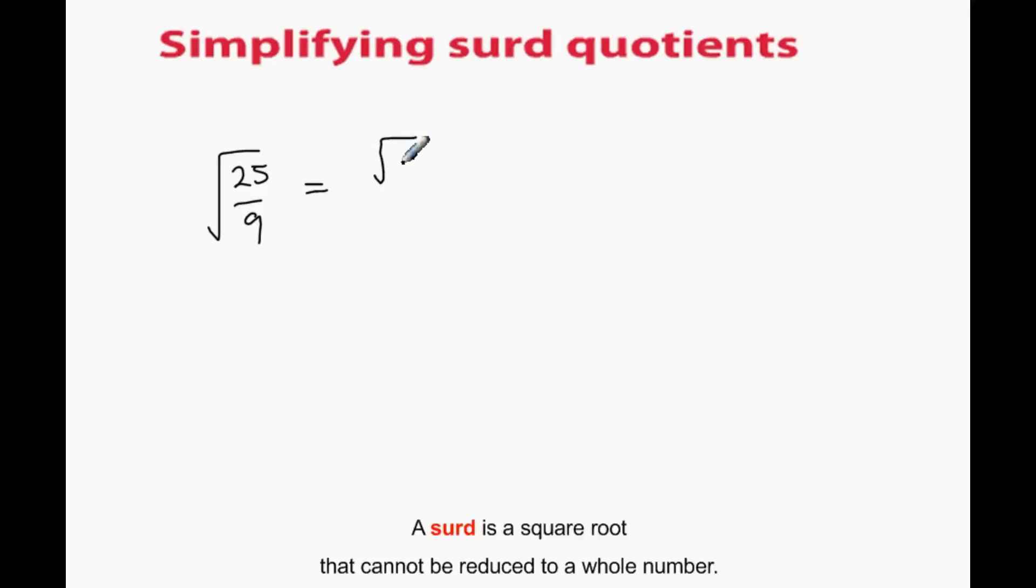To simplify this, we square root the top and square root the bottom separately. We get 5 over 3.